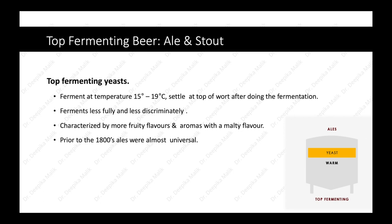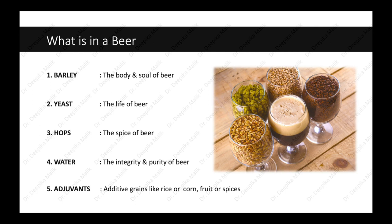Prior to the 1800s, ales were the most universal beer. Now, what is in a beer? First is barley — the body and soul of beer. This is a type of grain, and in spite of barley, other grains can also be used as the main starch source in beer making. Second is yeast, the life of beer. Then hops — the spice of beer. Water — the integrity and purity of beer. And adjuvants, which are additive grains like rice or corn, fruit, or spices.